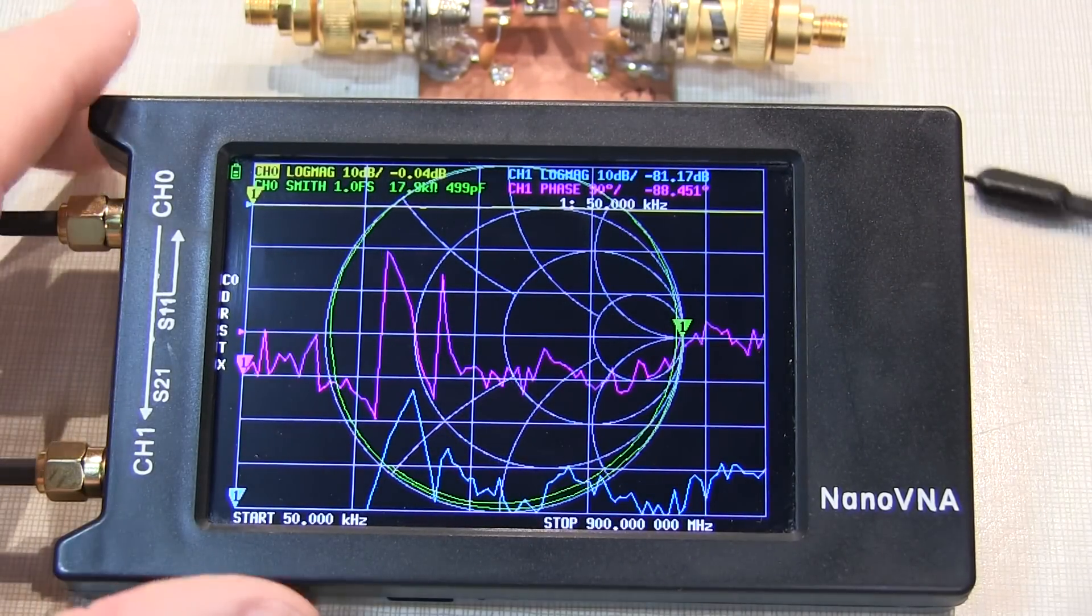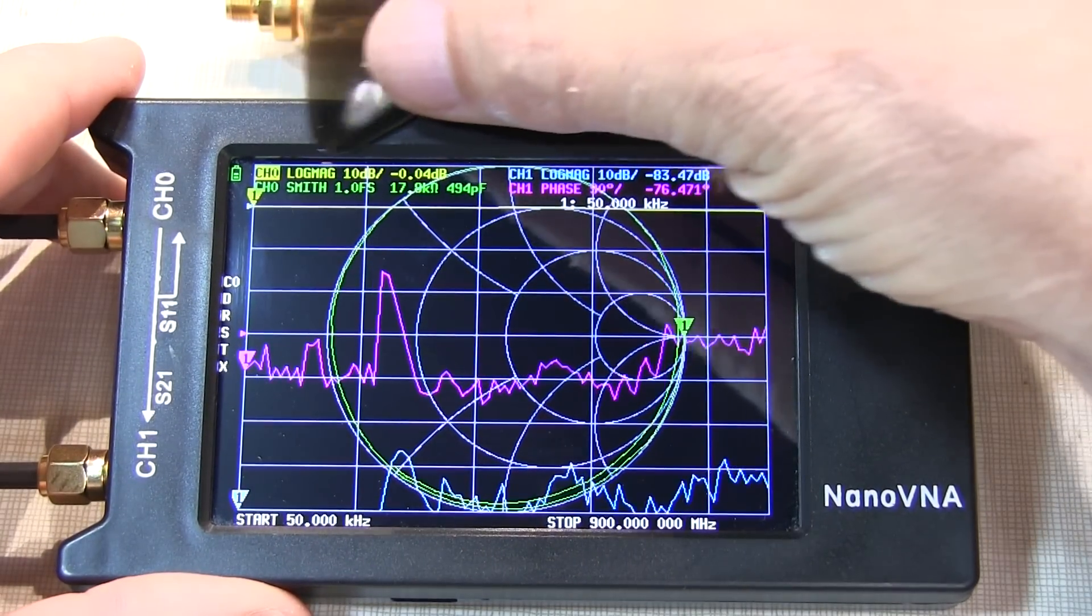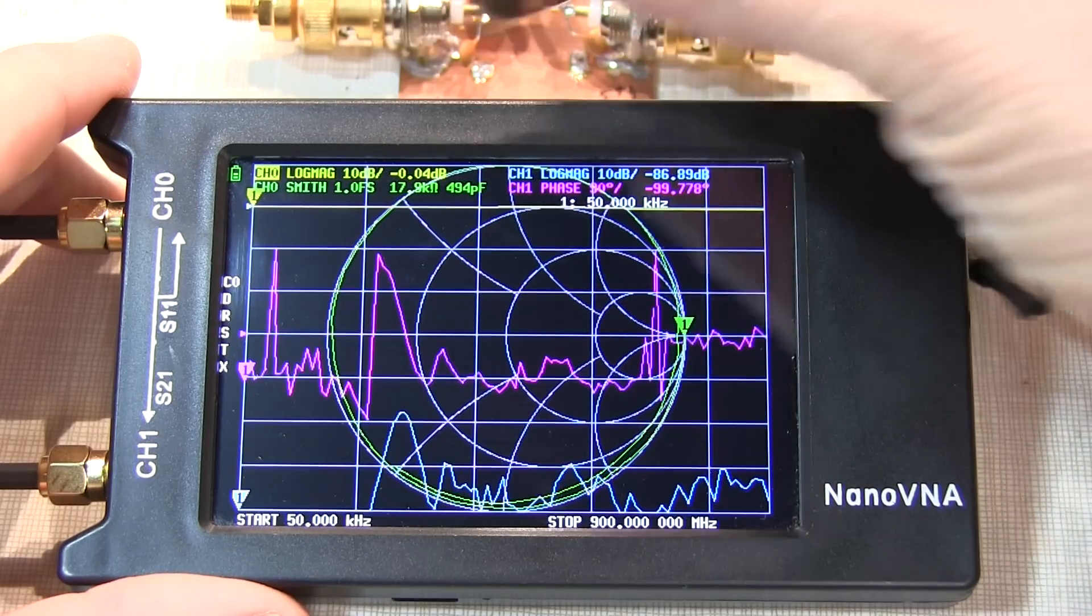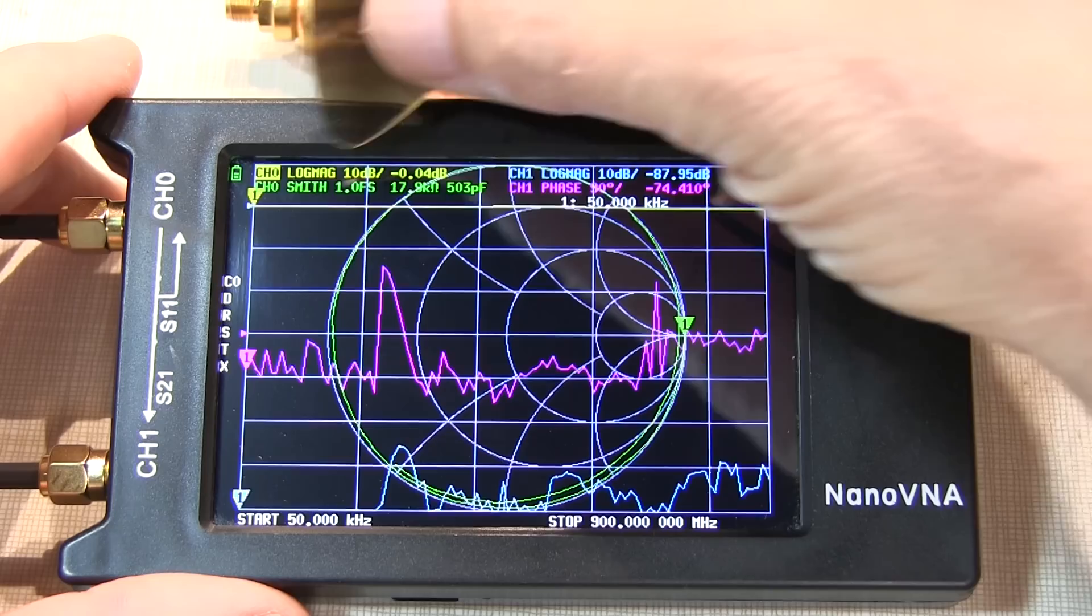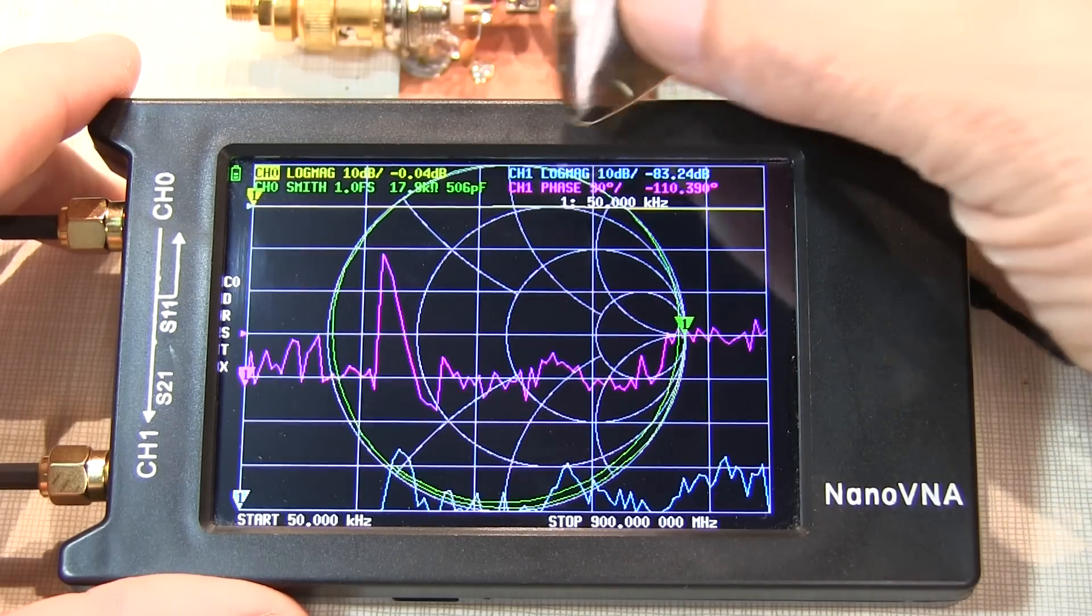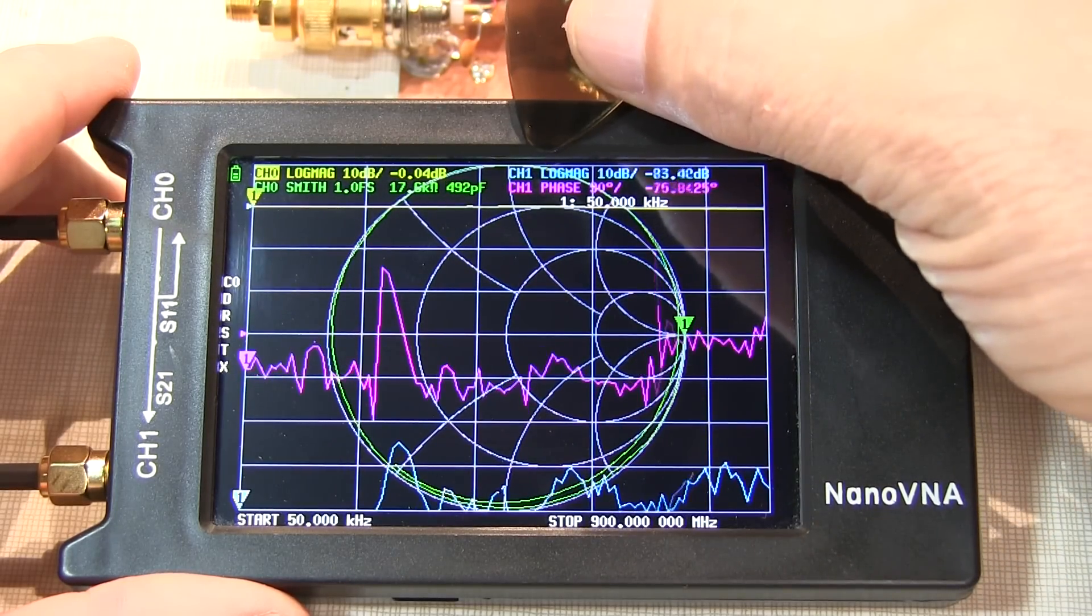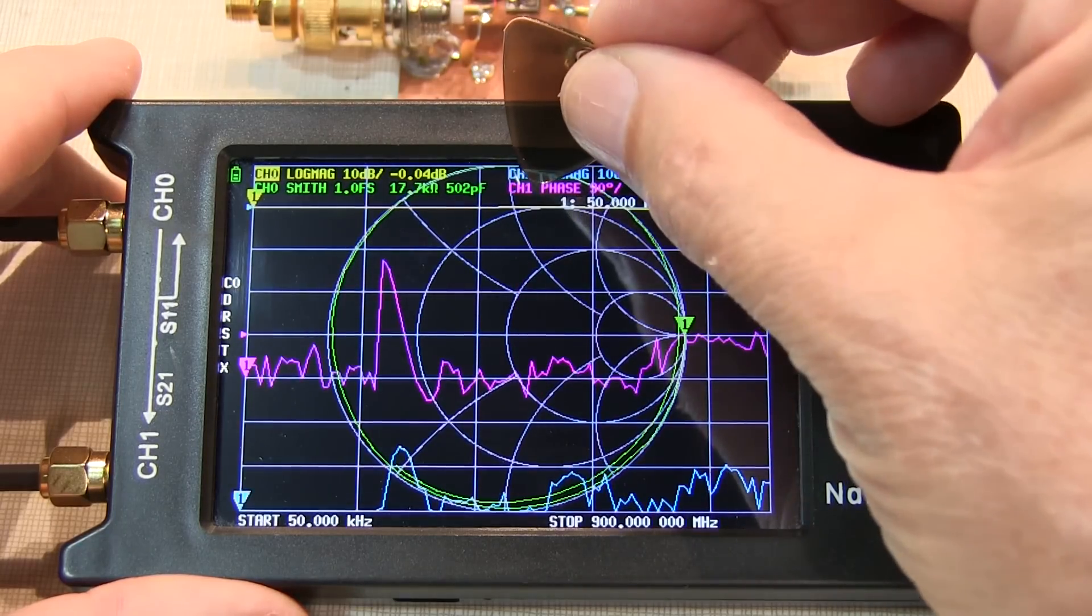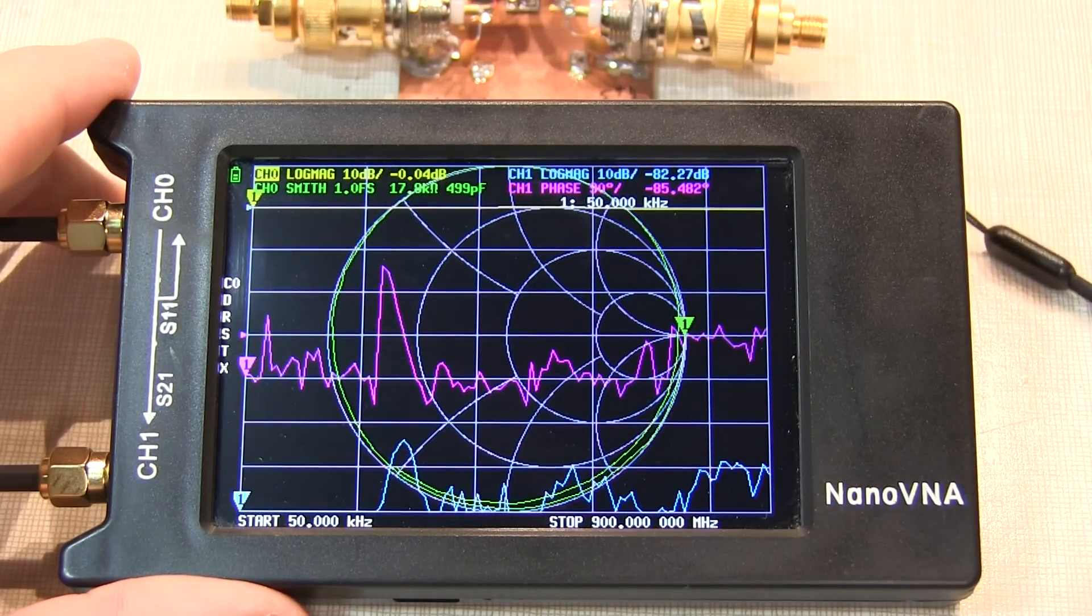By default, three of the traces we want are already set up. We essentially have the log magnitude of the input reflection coefficient on the yellow trace, we've got the Smith chart for the complex impedance on the green trace, we've got the log magnitude of S21 on the blue trace, and what we'll do is change the last one, the purple trace, to be SWR.